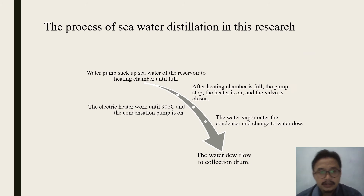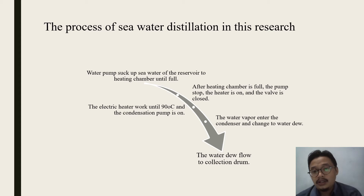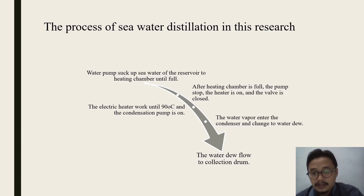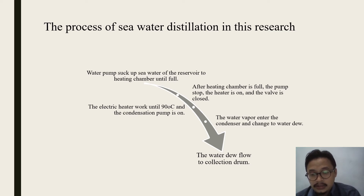The process of seawater distillation works as follows: first, the water pump draws seawater from the reservoir into the heating chamber until full. After the heating chamber is full, the pump stops, the heater turns on, and the valve closes. The electric heater operates until 90 degrees Celsius, then the condensation pump turns on. The water vapor enters the condenser, changes to liquid water, and flows to the collection drum.